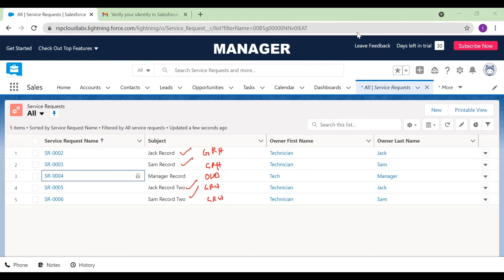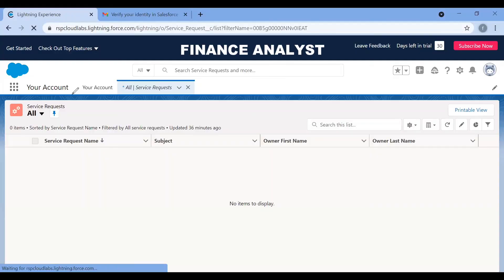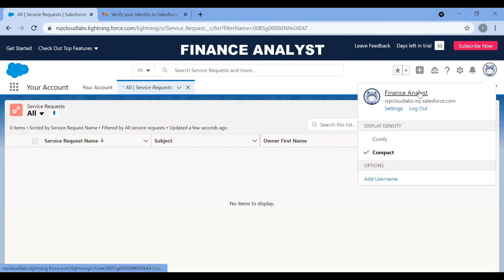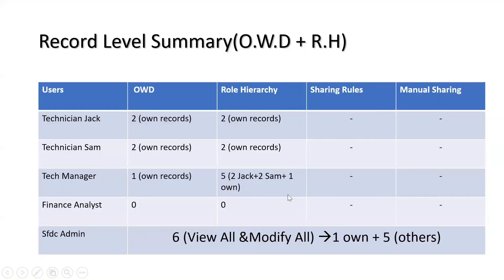This is how we can share the records owned by the engineers with the managers or the people above the role hierarchy. As per the expected count: the manager is able to see five records, technician Sam is able to see two, technician Jack is able to see two, and system administrator is able to see six. The last thing is the status of the finance analyst — since no records have been shared with this finance analyst, there would be zero records. Refreshing the screen confirms the number of records visible to this finance analyst is still zero. At the end of the record level security, system administrator would have six records throughout the entire discussion because he is the person who has all the records shared with him.